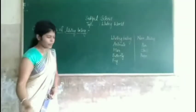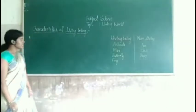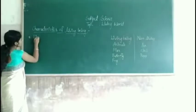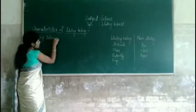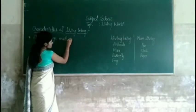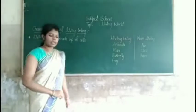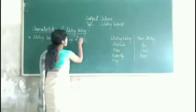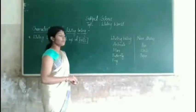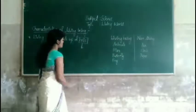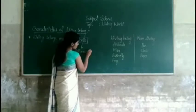Let's see which are the characteristics. The first characteristic is: living beings are made up of cells. Did you understand? What do you think about cells? Cells are microscopic organisms — cells are also called microscopic organisms.